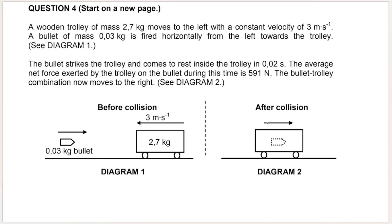Be careful — just because they say the bullet comes to rest inside the trolley doesn't mean that relative to the ground the bullet is at rest. The bullet will come to rest inside the trolley: it reaches the trolley, stops inside the trolley, lodges into the trolley. But the bullet-trolley combination appears to be moving to the right, and they do say that the bullet-trolley combination moves to the right.